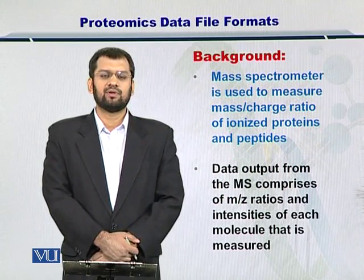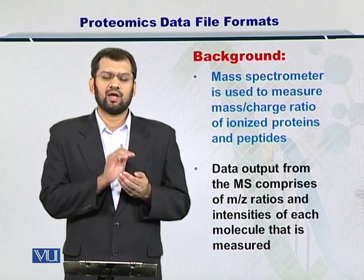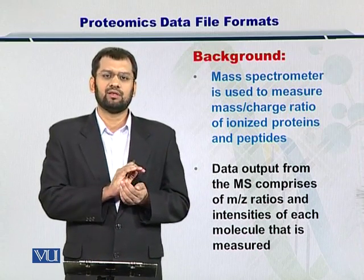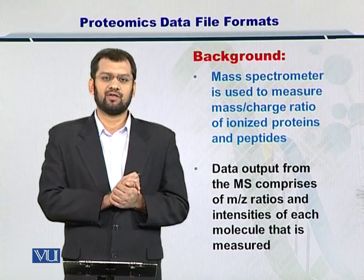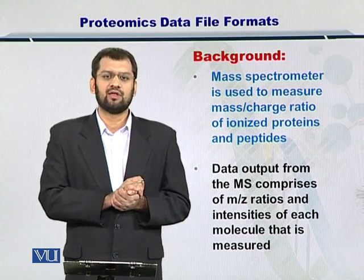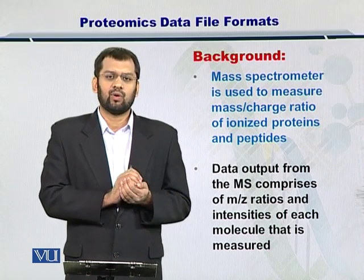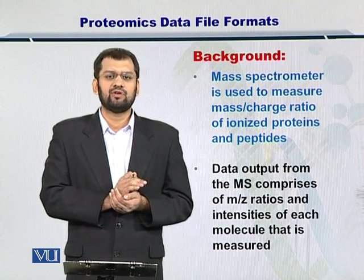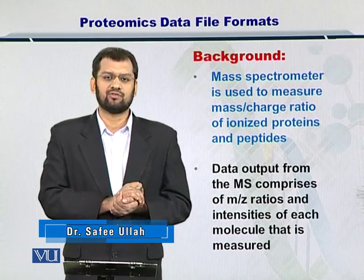A mass spectrometer is used to measure the mass over charge ratios of proteins or peptides. Once you ionize a protein or a peptide and inject it into the chamber of a mass spectrometer, it gets deflected according to its mass by the very big magnetic field. These deflections are measured as electrical signals representing the strength and magnitude of the signal, which then needs to be translated into the mass over charge ratio. This ratio can then be written in the form of a file on a computer attached to the mass spectrometer.